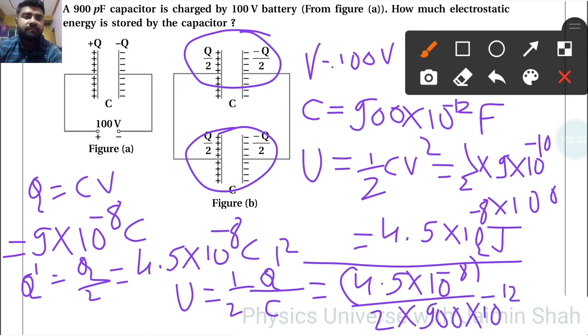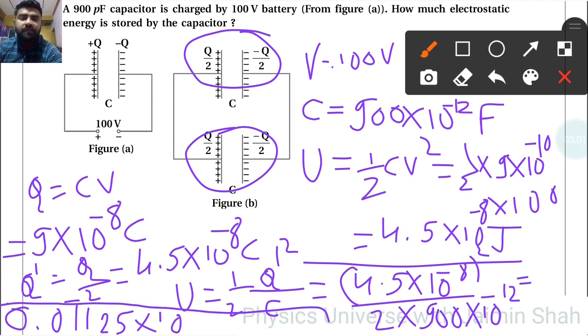That equals 4.5 into 4.5 upon 2 upon 900, so that is 0.0... I am writing that answer here. That is 0.01125 into 10 raise to...